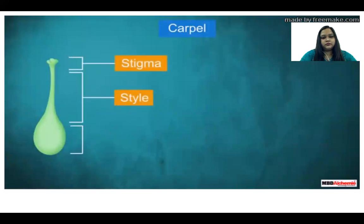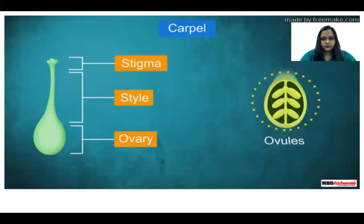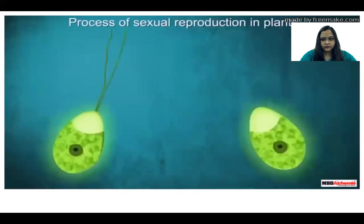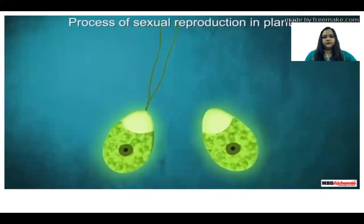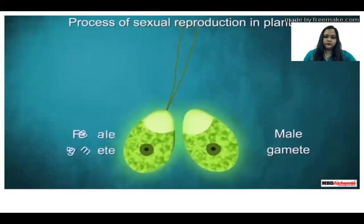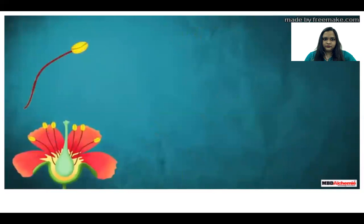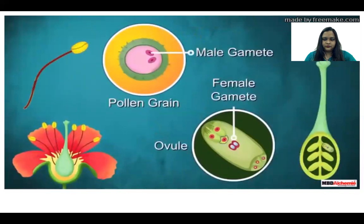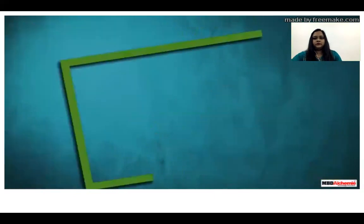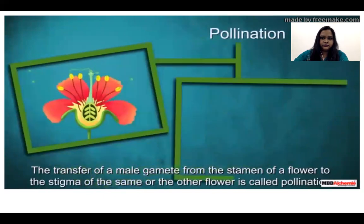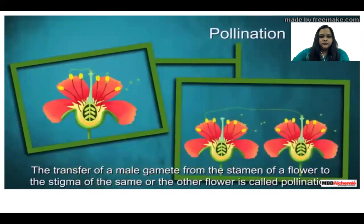Some flowers contain both male and female reproductive parts — such flowers are called bisexual flowers, for example pea and china rose. On the other hand, some flowers possess either the male or the female reproductive parts — such flowers are called unisexual flowers, for example corn and cucumber. A stamen is made of two main parts: anther and filament. The anther produces pollen grains, which contain the male gametes.